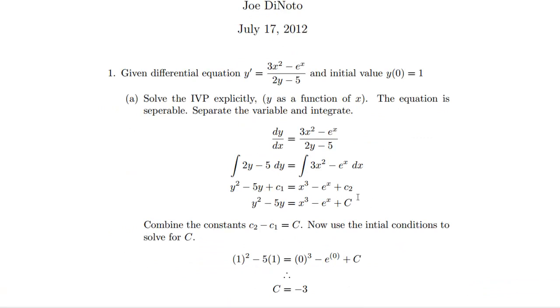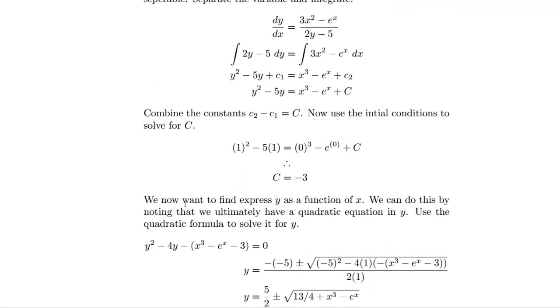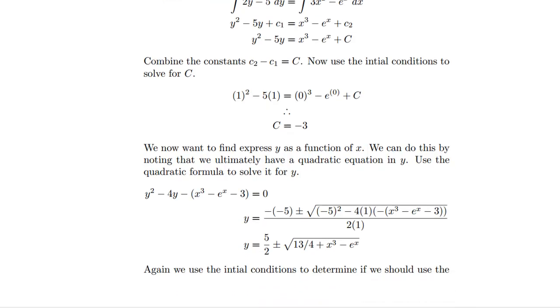Okay, so you can see I showed a couple of steps, the relevant steps, solved for C. And then I said, now we want to find and express Y as a function of X. We want to find, I'll probably put a comma there, express Y as a function of X. We can do this by noting that we ultimately have a quadratic equation in Y. Use a quadratic formula to solve for Y. And then I do that in like two steps, right? Some people can do this all in their head.